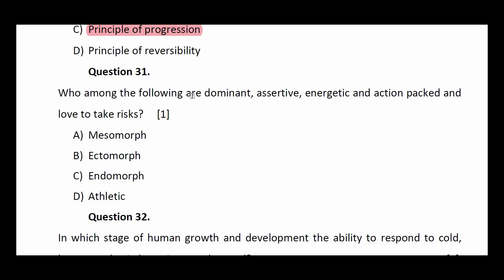Question number thirty-one: who among the following are dominant, assertive, energetic, and action-packed, and love to take risks? Options: mesomorph, ectomorph, endomorph, athletic. The answer is mesomorphs.